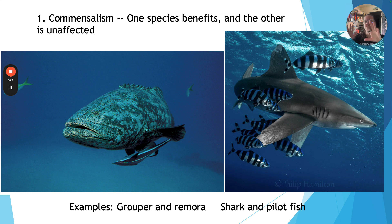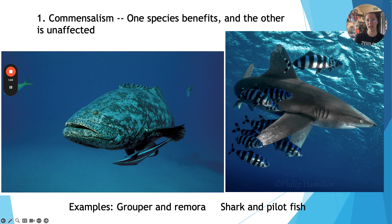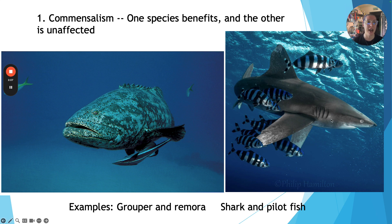Commensalism is where one species benefits but the other is unaffected. Examples include a grouper and a remora, or a shark and some pilot fish. The grouper provides protection for the remora because it's large and most animals won't bother it — essentially acting as a bodyguard. Similarly, the pilot fish hang with the shark for protection, but the shark experiences no harm or benefit whatsoever.